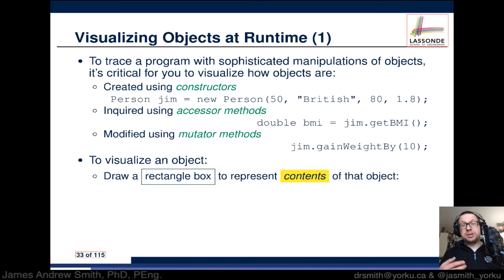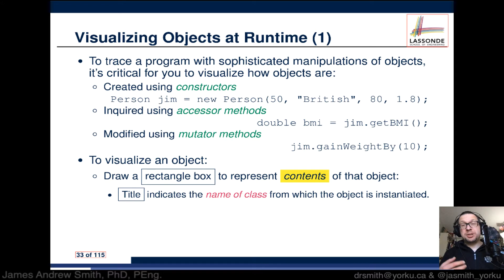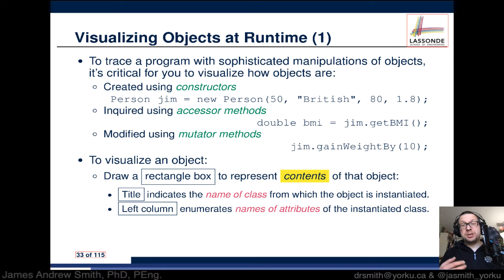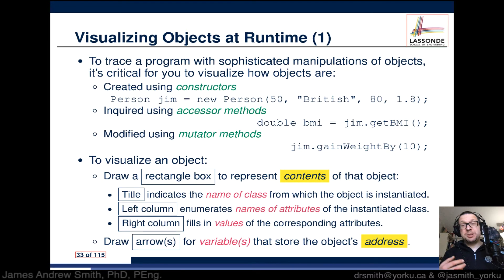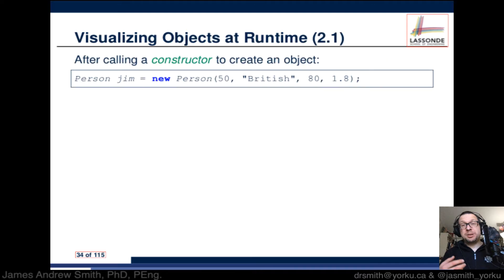Sometimes it's helpful to visualize what's going on using box diagrams — you'll see this in standard Java documentation. You have a rectangular box representing the contents of the object, with a title at the top showing the class name. In the left column you list the names of the attributes, and in the right column you fill in the corresponding values. You also draw arrows for the variables that store the object's address in memory.